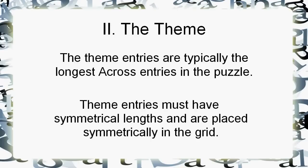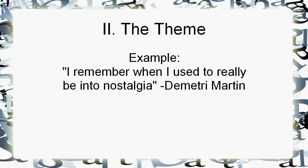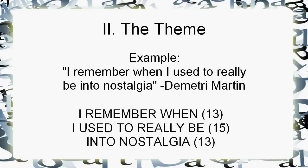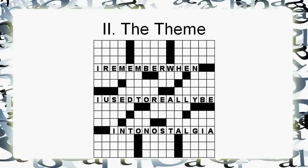Let's show a concrete example. Let's say you had a quip in mind that you thought would make a great crossword puzzle, like this one from Demetri Martin. It's kind of short, to the point, and funny. Could it work as a crossword? Yes, if you can break it up into symmetric chunks. In this one, the first chunk is 13 letters, the second chunk is 15, and the third chunk is also 13. So the top and bottom ones are symmetric pairs, and the center one goes in the middle.